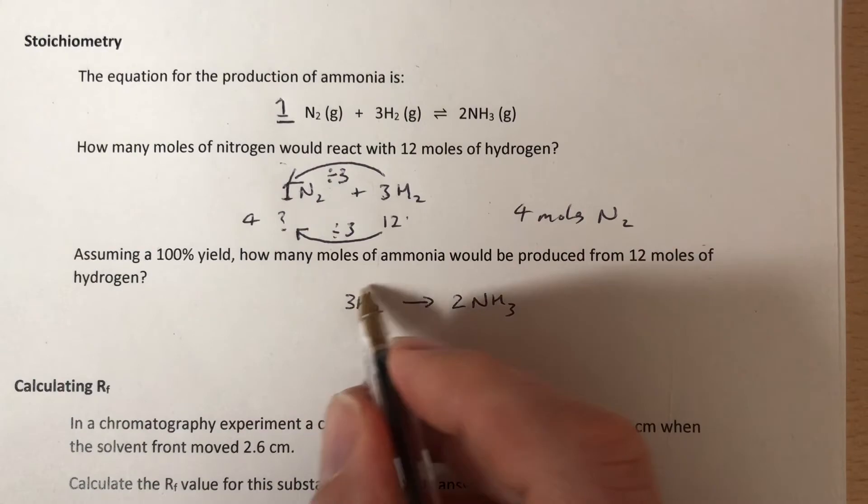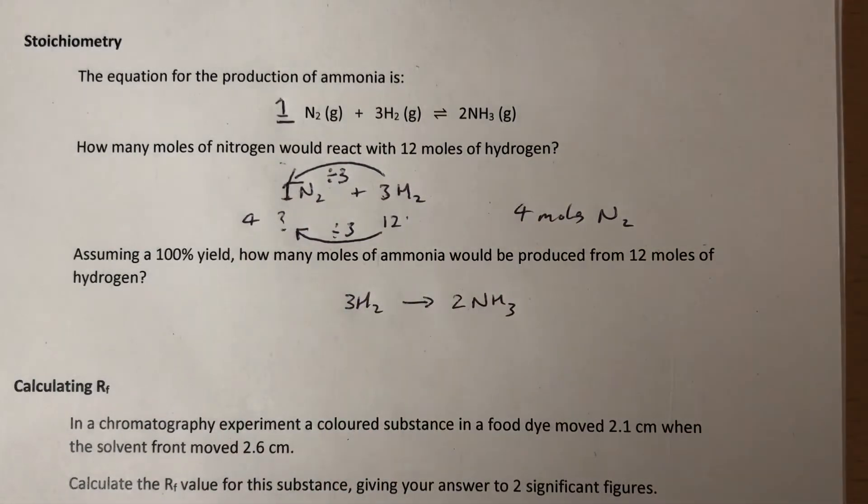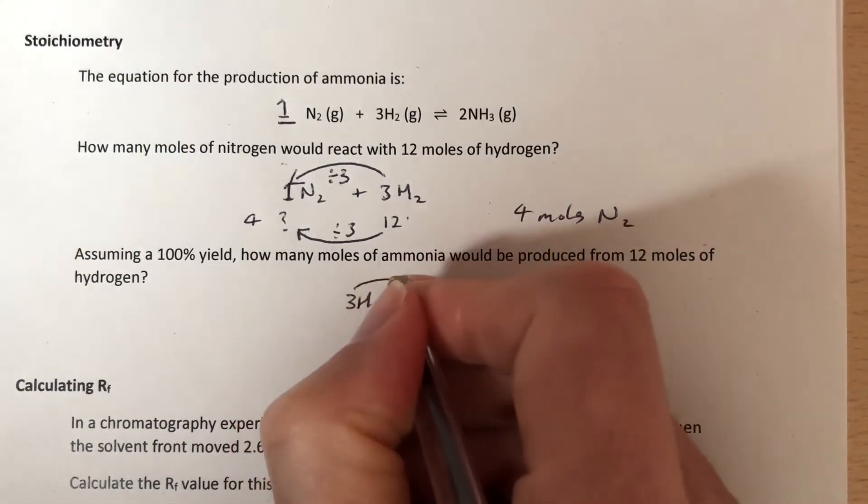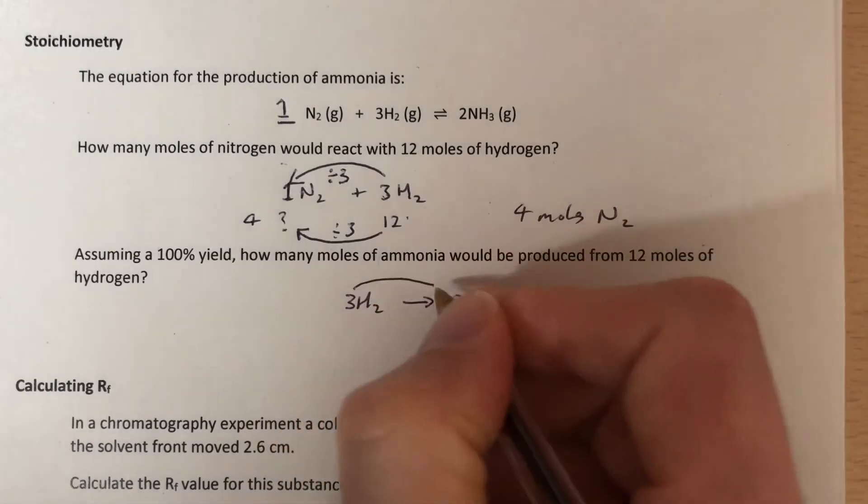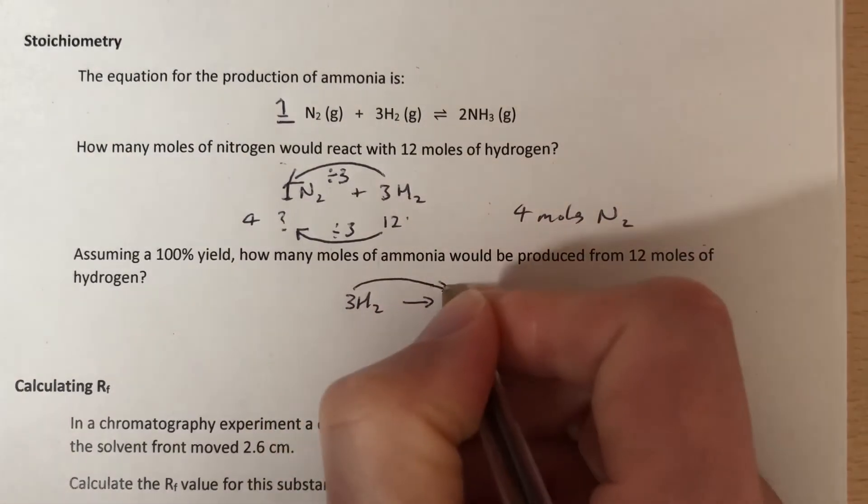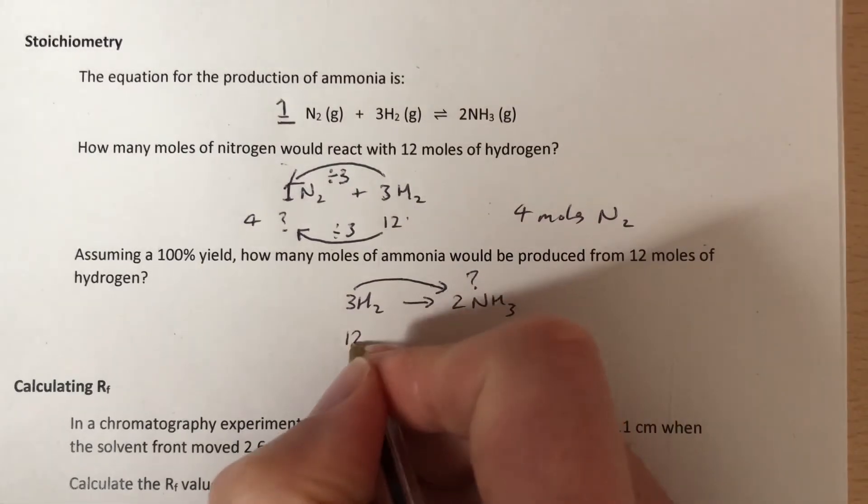Okay so how do we get from three to two? A bit more difficult this time. So we're going from three to two there, and that's the question mark this side, and we've got 12 here.